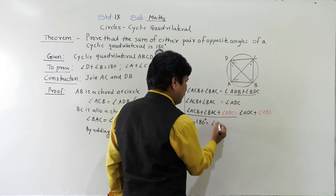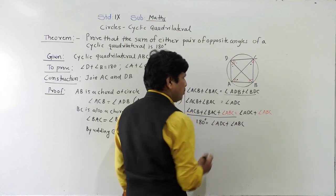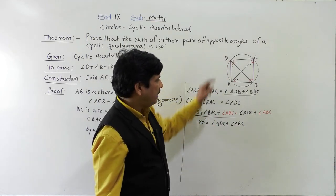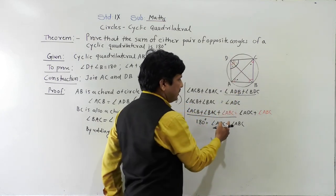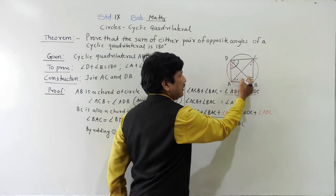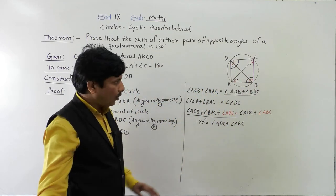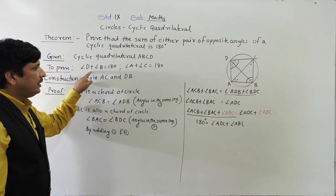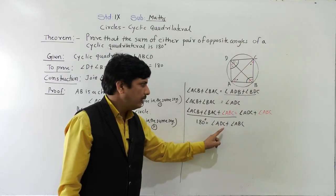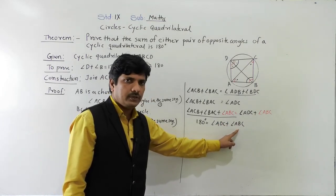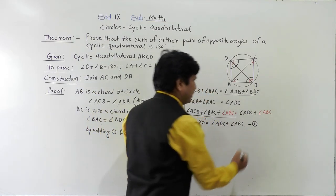So, what we get here: angle ADC plus angle ABC is equal to 180 degrees. ADC is angle D, and ABC is angle B. So, angle D plus angle B is equal to 180 degrees. We have received the first result.